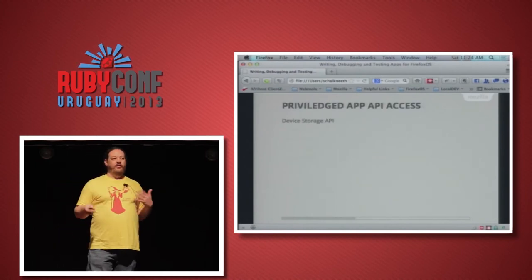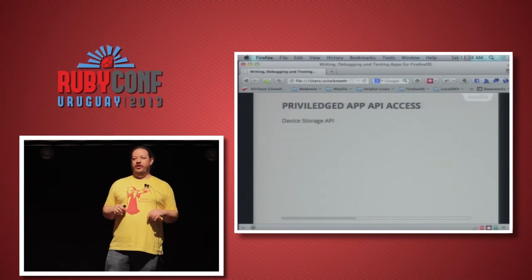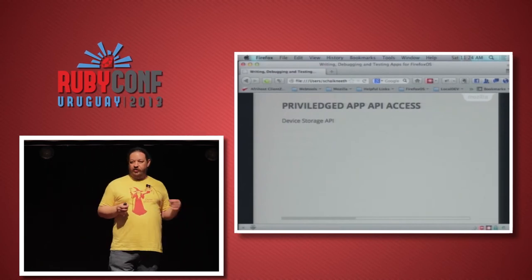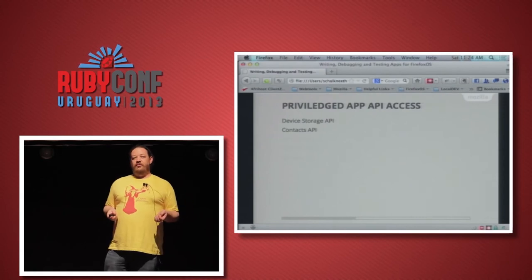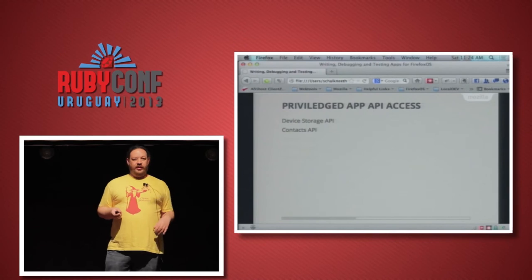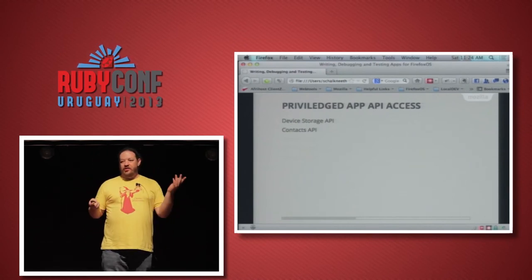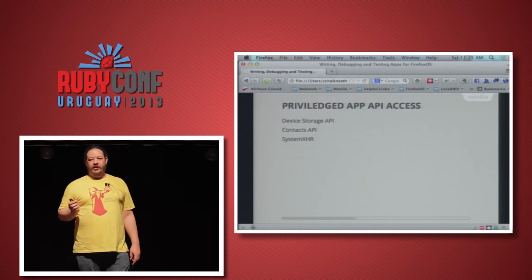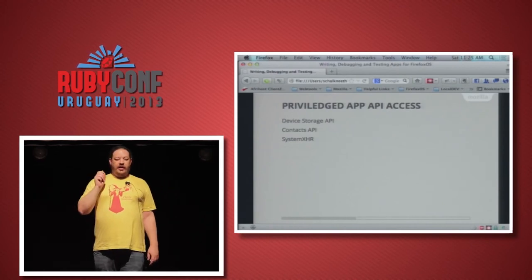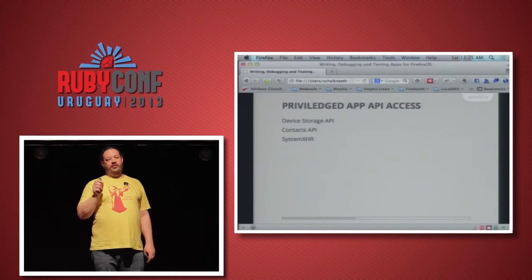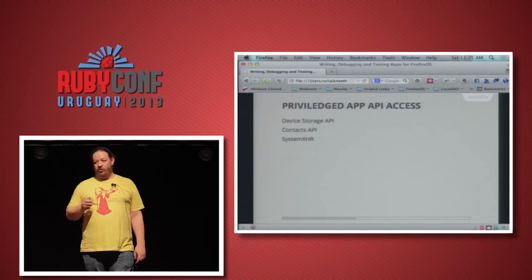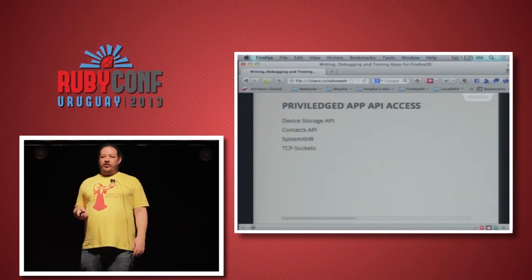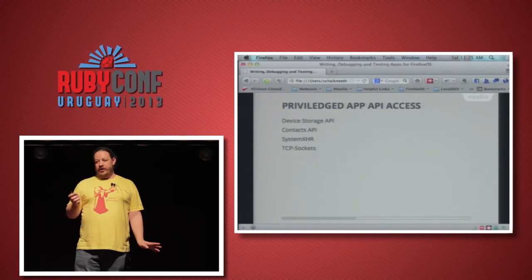Privileged apps get access to more sensitive stuff. Device storage — not app cache, but actual storage on the device — lets you read and write to the SD card and access user pictures, videos, and music files. You also get access to the Contacts API to create, import, manage, and delete contacts. System XHR lets you make cross-origin requests without JSONP or CORS worries — straight Ajax calls routed through a proxy. TCP sockets give you full socket access for chat apps, and the browser API lets you embed a whole browser in your app and control it programmatically.